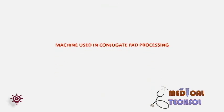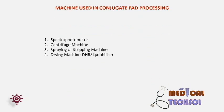Machines used in conjugate pad processing: 1. Spectrophotometer — used to scan the gold wavelength and determine the absorbance of the protein and gold conjugate. 2. Centrifuge machine — used to centrifuge the gold conjugate to collect the conjugated pellet. 3. Spraying or striping machine — used to dispense the gold conjugate onto the conjugate pad. 4. DHR or Lyophilizer — used for drying the conjugate pad.